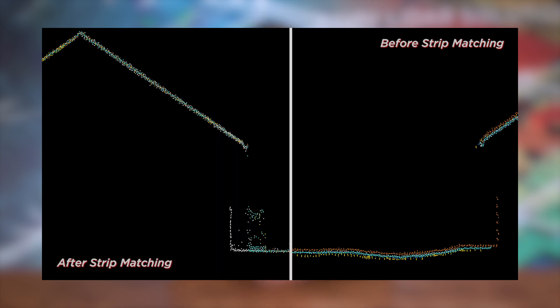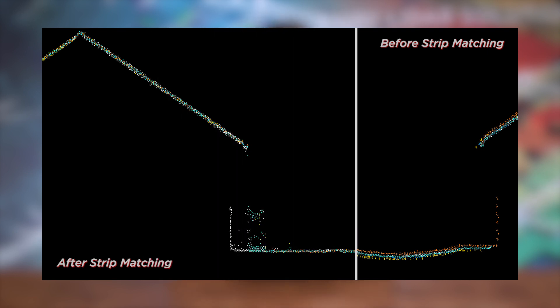Strip matching is simple in theory and is the process of refining a point cloud's accuracy by optimizing how well overlapping strips of LiDAR data match one another. In more technical terms, automatic correspondences are used to determine position and orientation corrections throughout time along the scan trajectory.